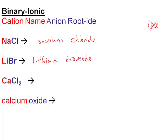Calcium chloride is also binary — it has calcium and chlorine. Its formula is CaCl2. Now, why isn't it di-chloride? The rule is: for covalent molecules, you use prefixes. For ionic compounds, you do not use prefixes. Why is there a subscript 2? Because calcium has a plus 2 charge and chlorine has a minus 1 charge. To make it neutral, you need two chlorides per one calcium.